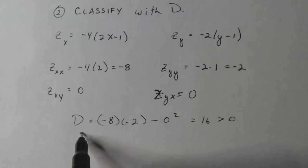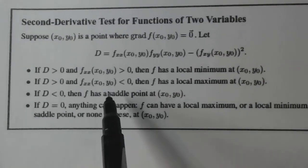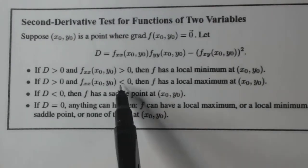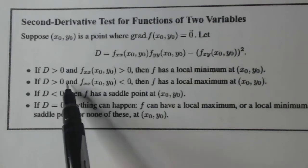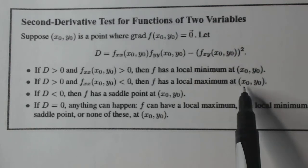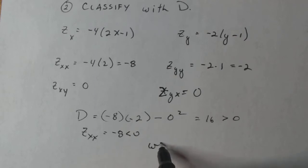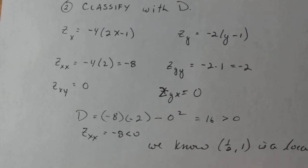So let's see, then I know that z sub xx is negative eight, which is less than zero. So that means that if I have a negative f sub xx, which is this case, so positive discriminant negative z sub xx, then I have a local maximum at (x0, y0). So under this case, we know (1/2, 1) is a local max.